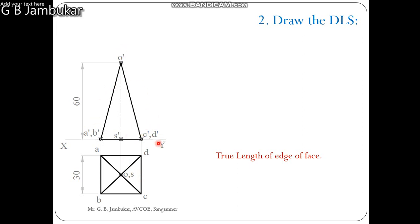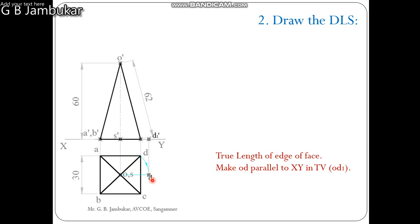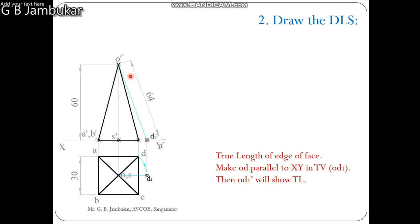We need true length. Out of these four edges, any one should be parallel to XY so that we get the true length in the front view. Here we make edge O'D parallel to XY. Take center O, distance O, rotate this point D at D1. O D1 will be parallel to XY. The front view of this point D1 is on XY. By drawing projection perpendicular to XY, we get point D1'. Join O' D1' to get the true length.